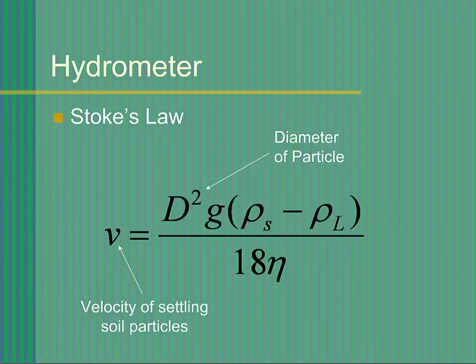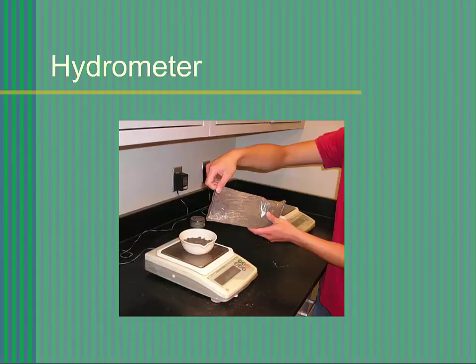In addition, we can determine the mass of solids in suspension by measuring the specific gravity of the slurry still in suspension. Measurements are usually conducted over a 24-hour period. Employing Stokes' law, we can determine the distribution of particles in this soil sample.